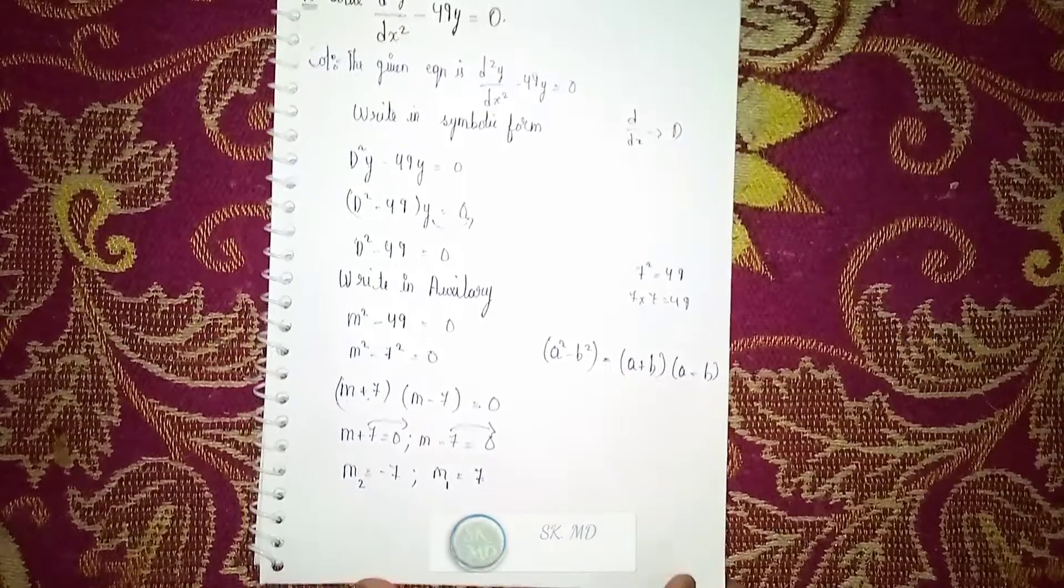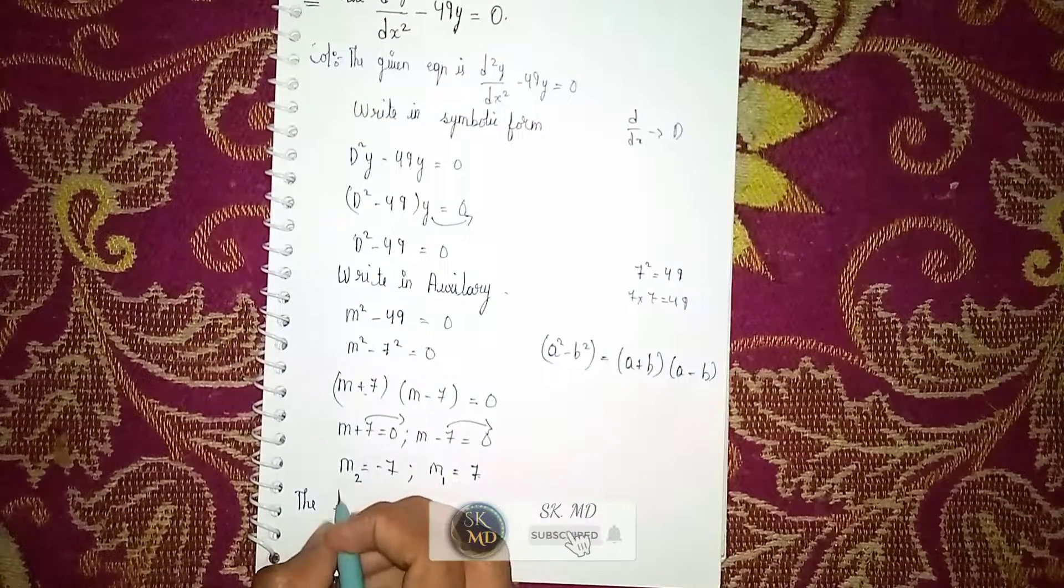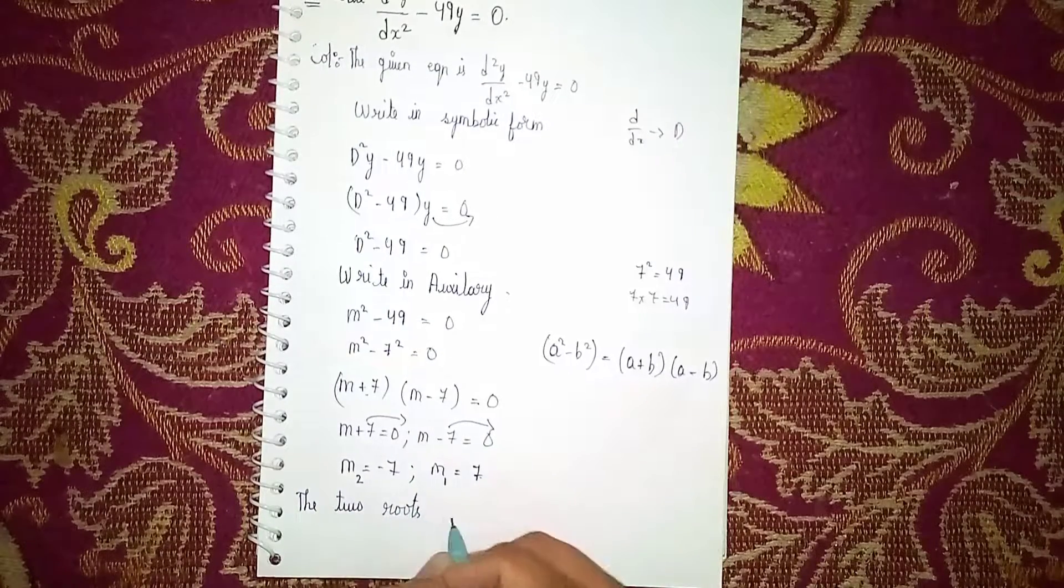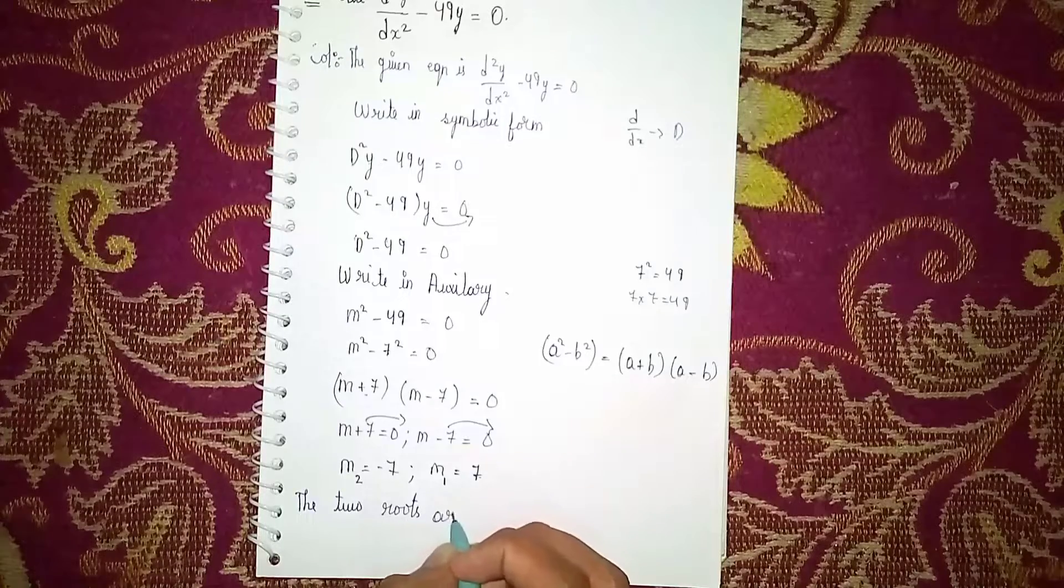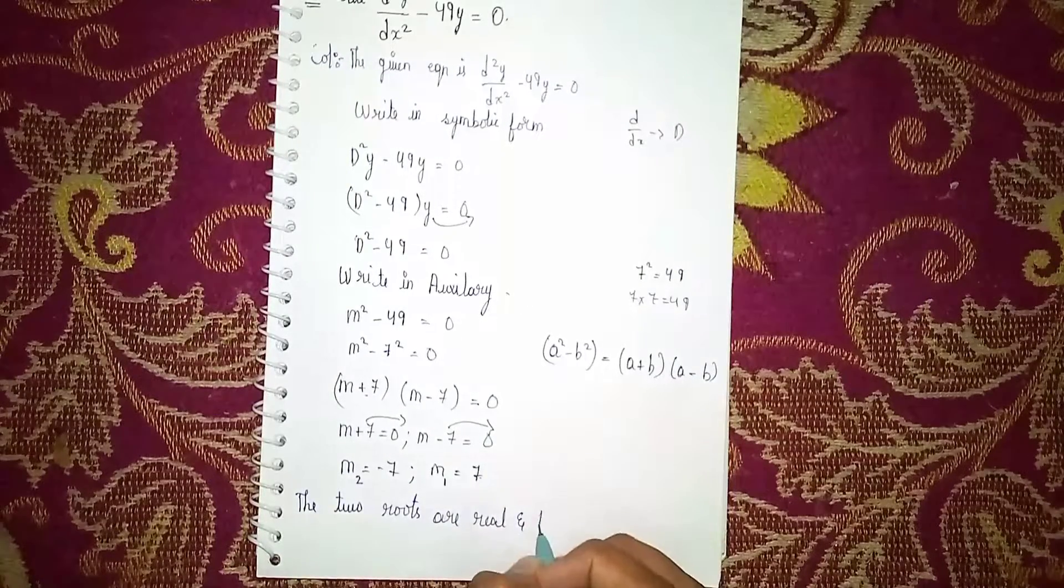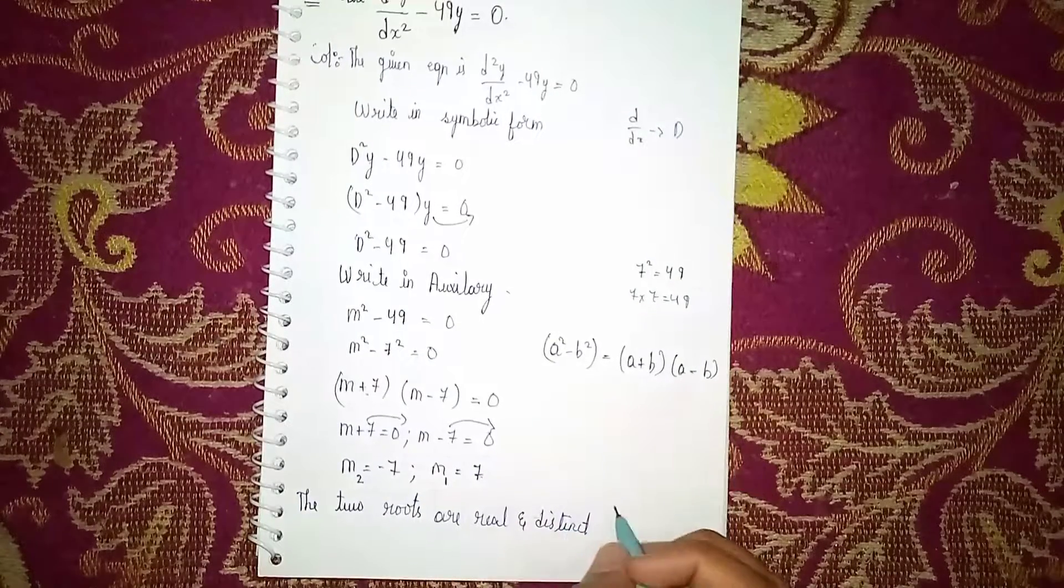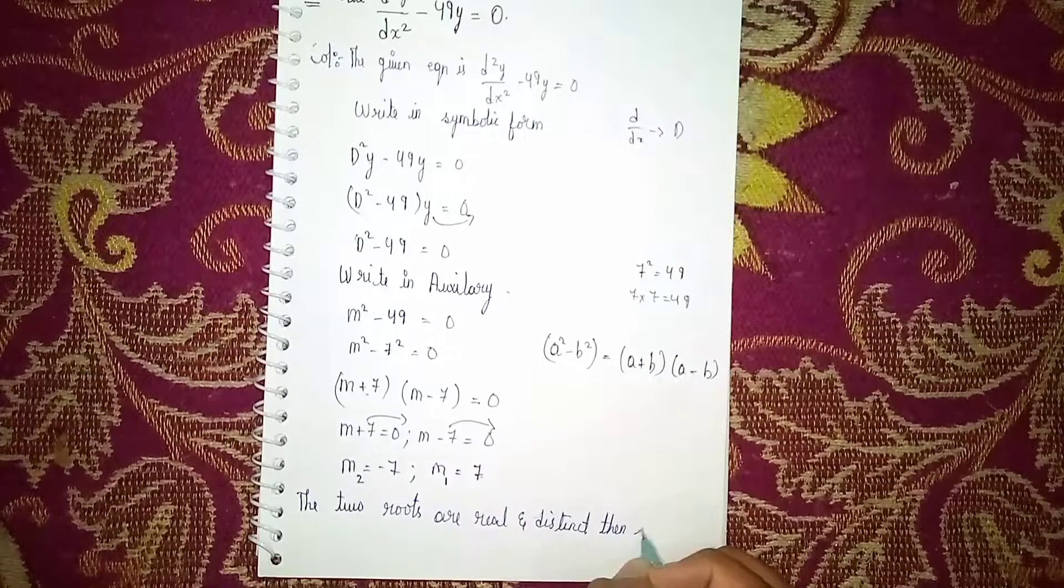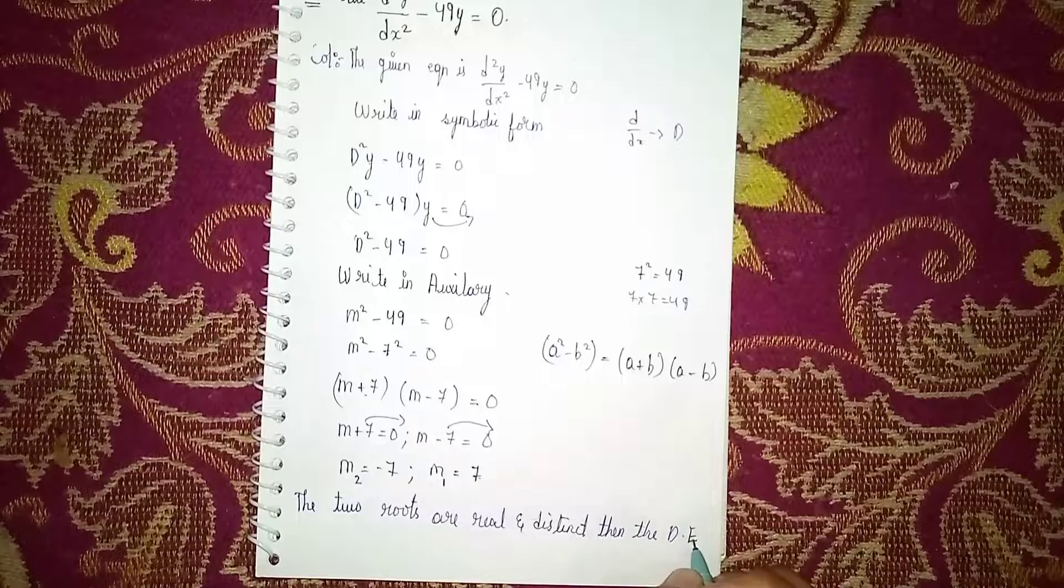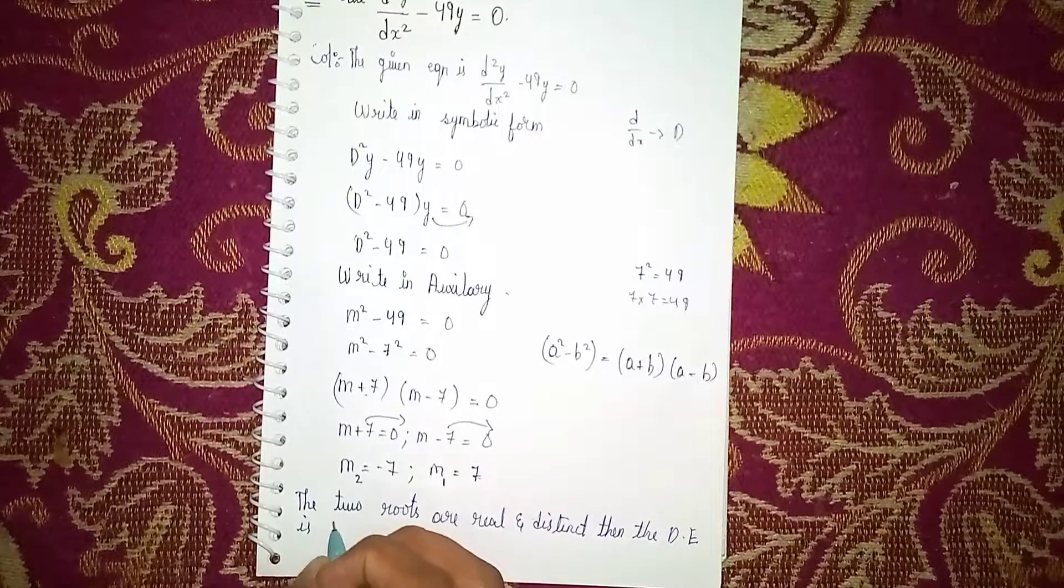Now at last we are applying which case. The two roots are real and distinct. Then the differential equation solution is y = Ae^(m₁x) + Be^(m₂x).